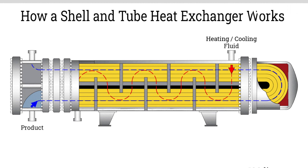Heat exchangers are commonly used in various industrial applications. Shell and tube heat exchangers consist of a cylindrical shell with a bundle of tubes inside. One fluid flows through the tubes — the tube-side fluid — while the other flows around the outside of the tubes — the shell-side fluid.